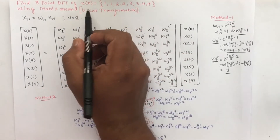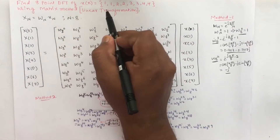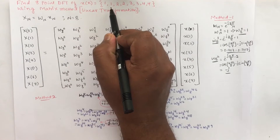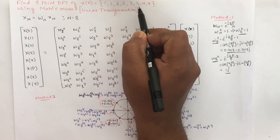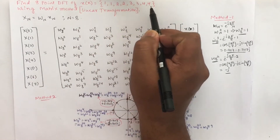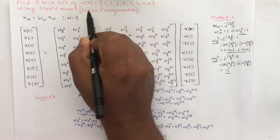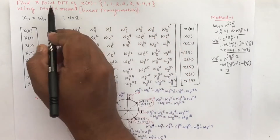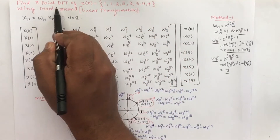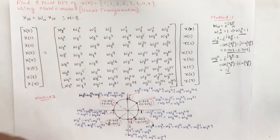Here they have given the sequence x[n] = 1, 1, 2, 2, 3, 3, 4, 4. For this sequence, we need to find the 8-point DFT using the matrix method.